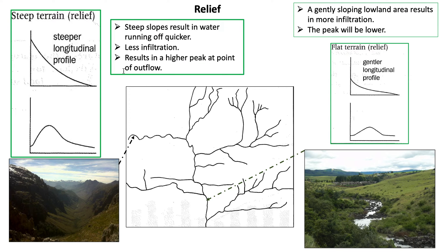Looking at relief: steep terrain with a steep longitudinal profile results in water running off quicker, less infiltration, and thus a higher peak at the point of outflow. With a more gentle longitudinal profile or flat terrain, we have a gently sloping lowland area which results in more infiltration and thus a lower peak flow. So a higher peak for steep terrain and a lower peak for flat terrain.